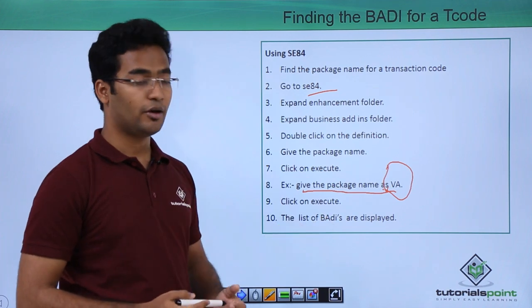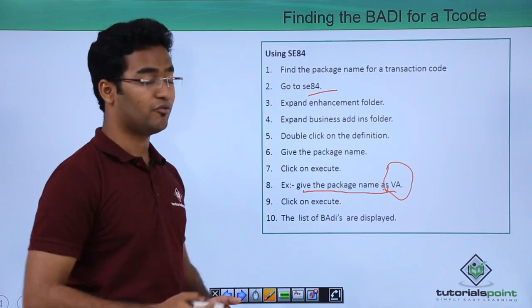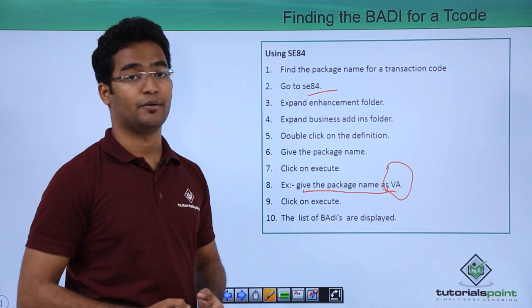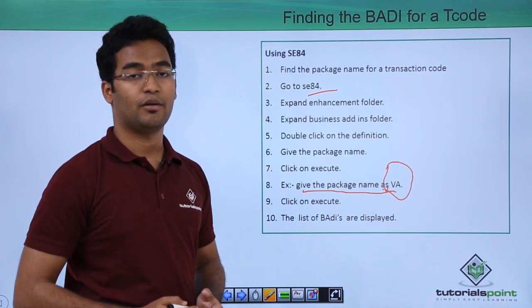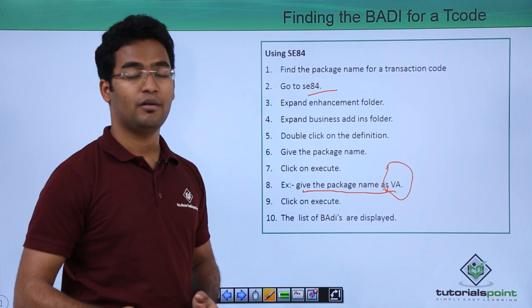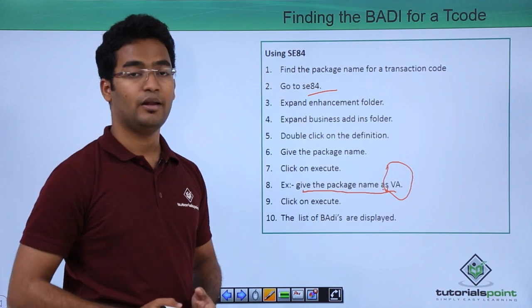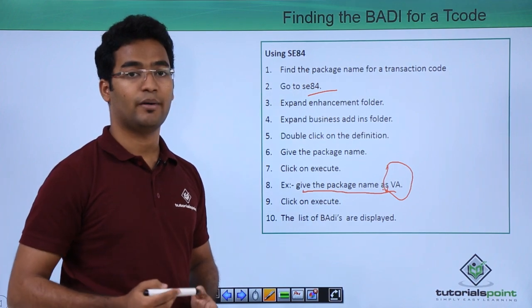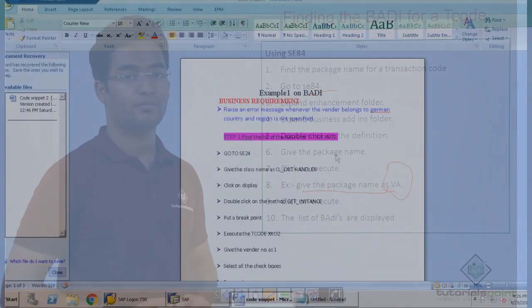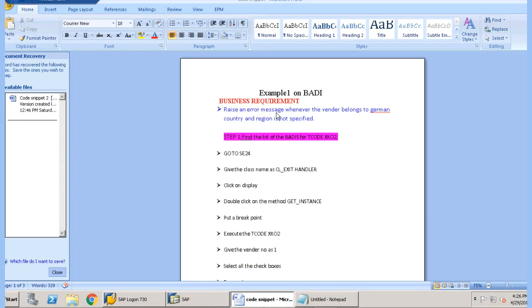When we click on execute, our list of BAdIs will be displayed. Now with the help of a simple practical example I will explain how to find a BAdI within a transaction code. We have a business requirement to raise an error message whenever the vendor belongs to Germany country and the region is not specified.